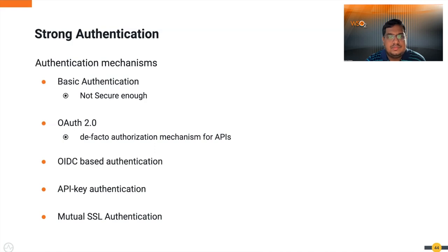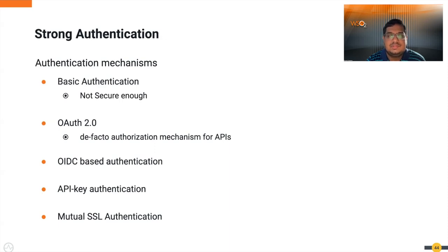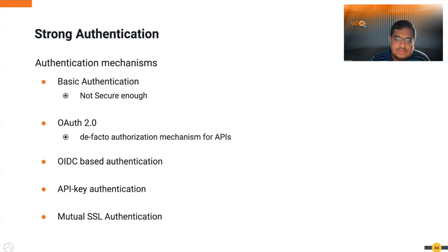OAuth 2.0 is another authentication mechanism with several key components: resource owner, client, authorization server, and resource server. Depending on the relationship between these parties, the way to acquire an access token representing a user's permission may differ — this is where grant types come in. OAuth 2.0's flexible grant types have made it the de facto authorization framework for APIs. OIDC, or OpenID Connect, is built on top of OAuth 2.0 and allows verification of the end user's identity based on authentication performed by an authorization server, while obtaining profile details via a REST-like mechanism.